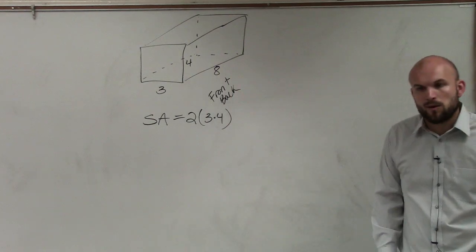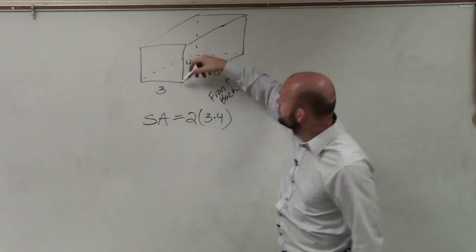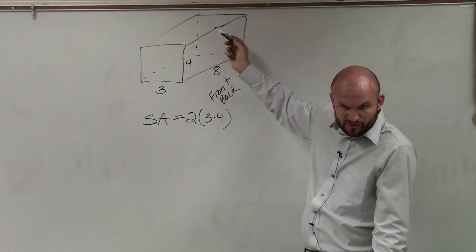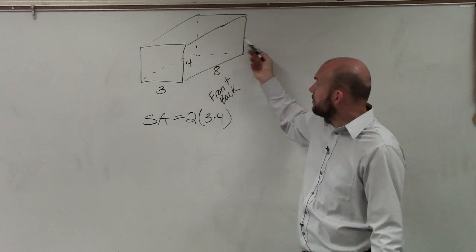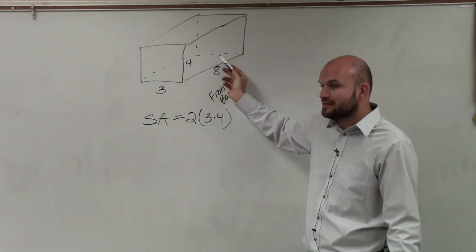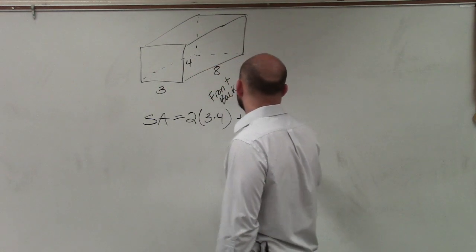Wait, why did you do 2? I'm sorry. I didn't do 2. Oh, because there's 2 of them. Here's your front side. Here's the back side. And there's 2 of them. They have the same area. They have the same dimensions, right? If this is a rectangular prism, if that's 4, that's 4. If that's 3, that's 3.